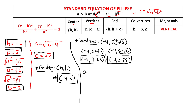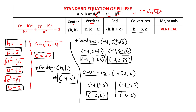For the co-vertices, the formula gives (h ± b, k) = (−4 ± 2, 5). Separating: one co-vertex is (−4 + 2, 5) = (−2, 5), and the other is (−4 − 2, 5) = (−6, 5). These are the coordinates of the co-vertices.